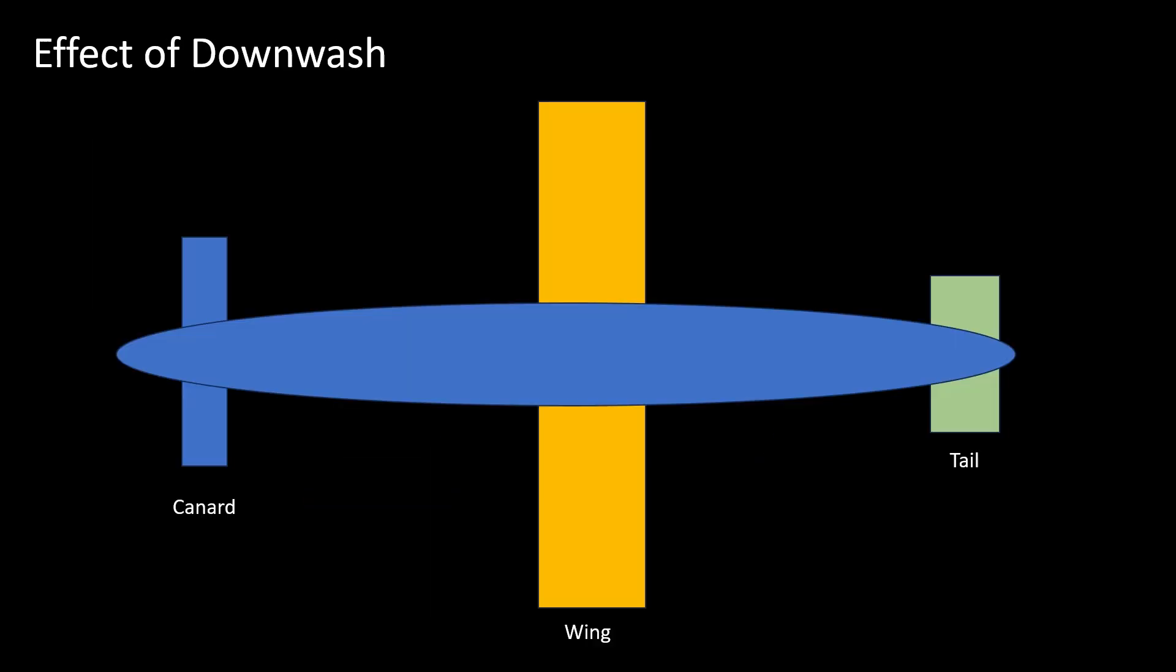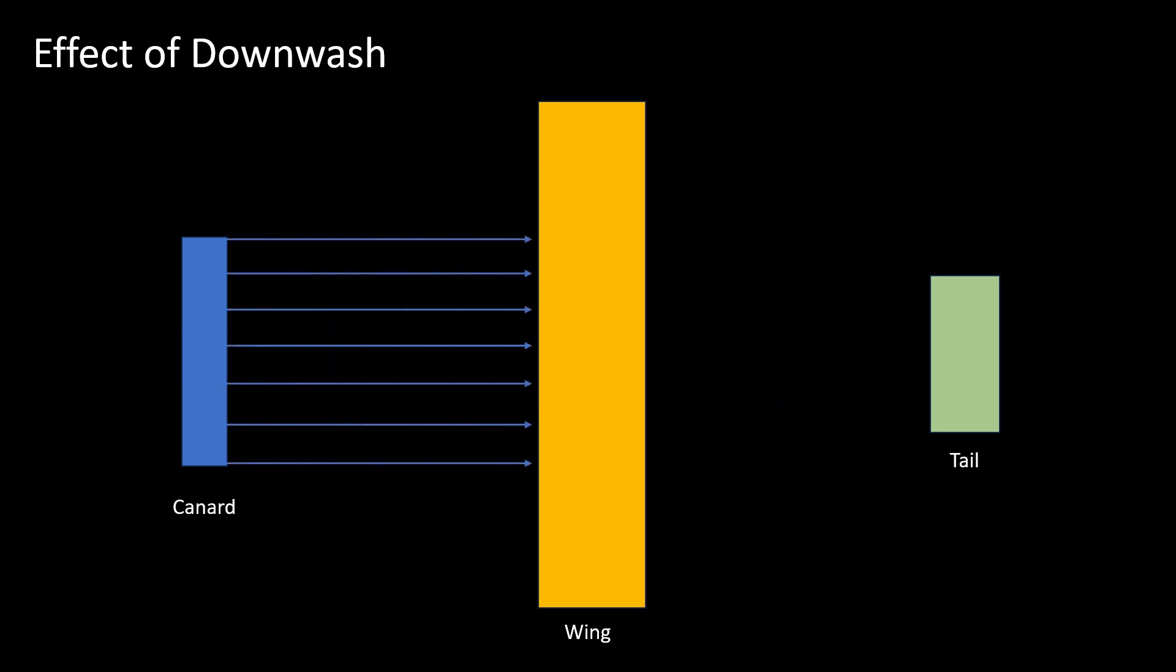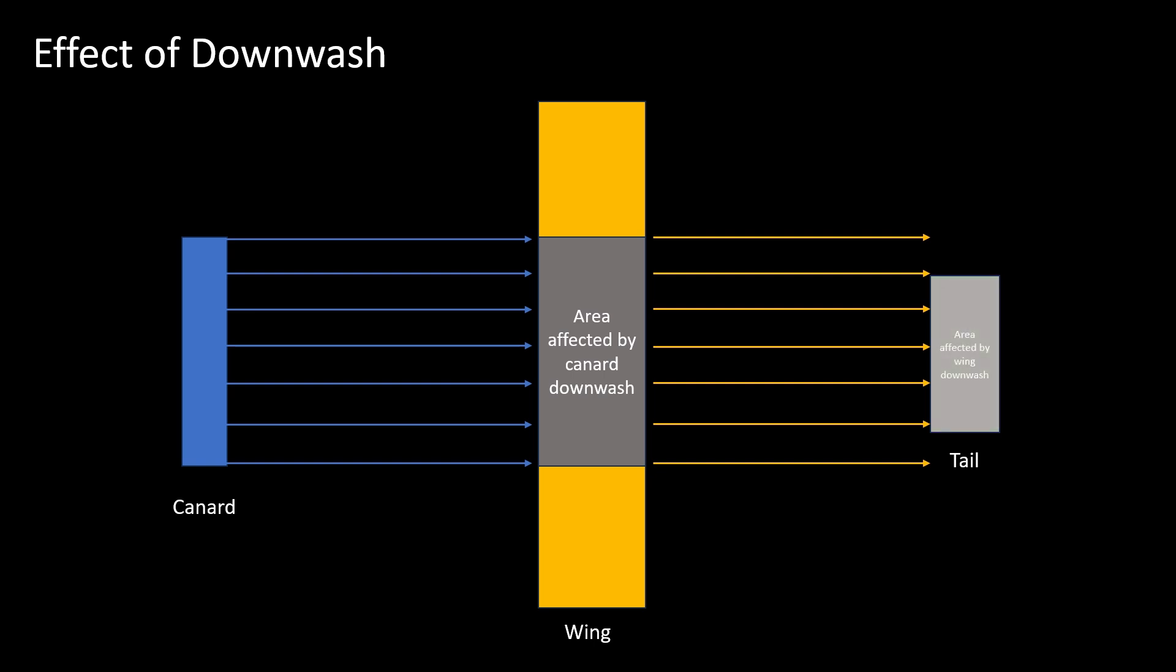The main wing is affected by the downwash due to canard, which reduces the angle of attack and lift of the portion of the wing that gets shadowed by the canard. The horizontal tail is affected by the downwash from the shadowed portion of the wing.